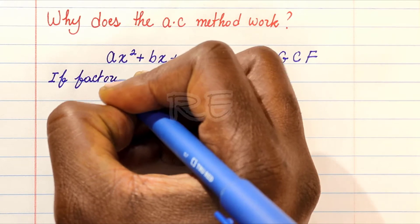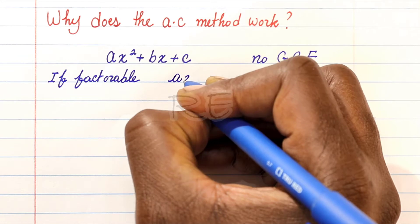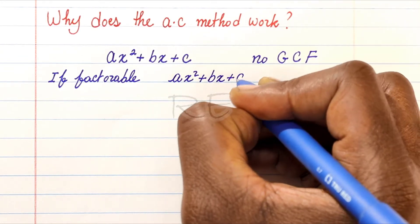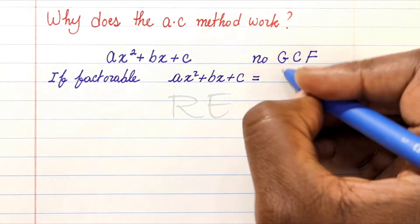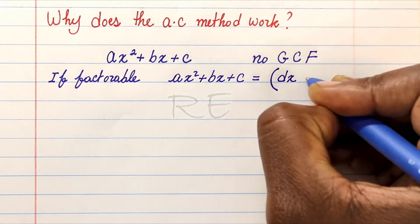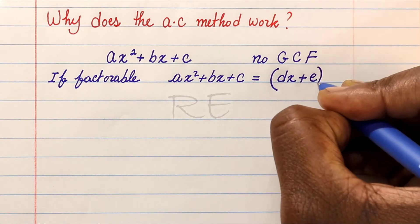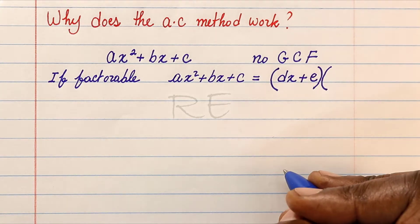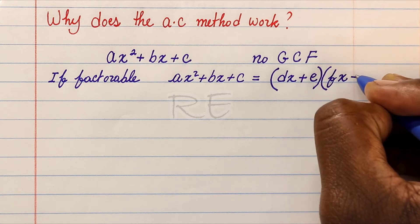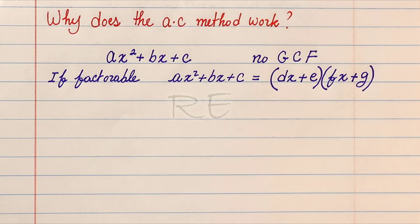Now, ax squared plus bx plus c, if factorable, will give you a product of two binomials: dx plus e times fx plus g. We're following the order of the alphabet.